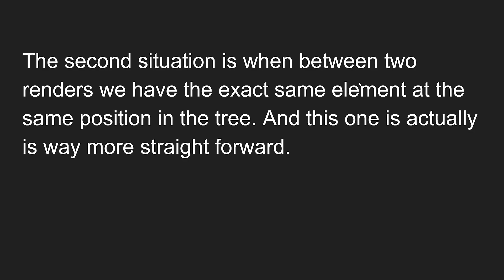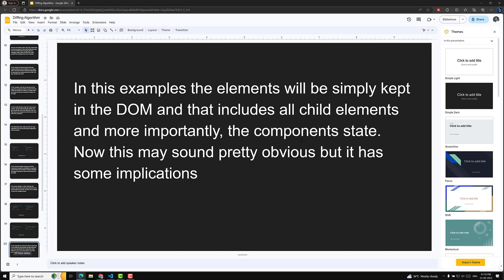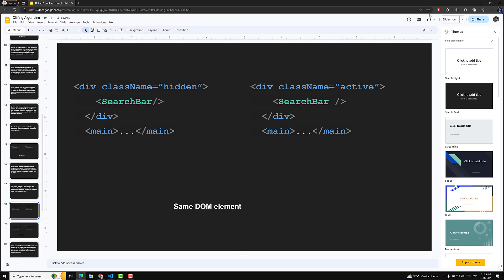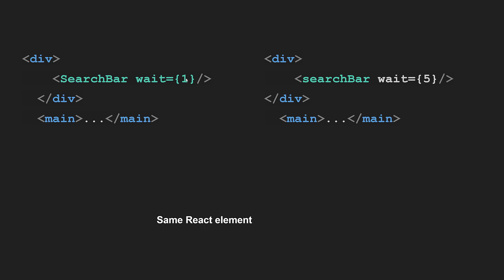Now the second situation: between two renders, we have the exact same element at the same position in the tree. Here we have the same div and search bar. What has changed is only the class name — from 'hidden' to 'active' — or only the props, like search bar weight going from one to five. The elements and everything are the same — same React element with different attributes.